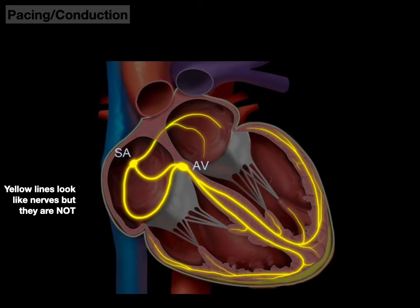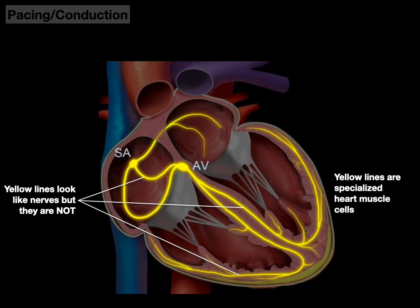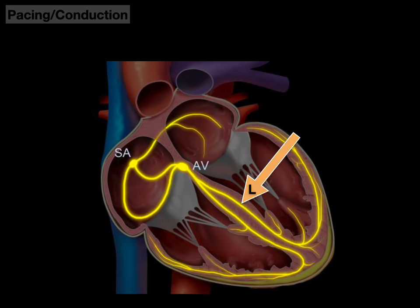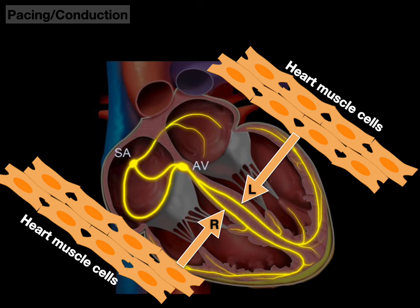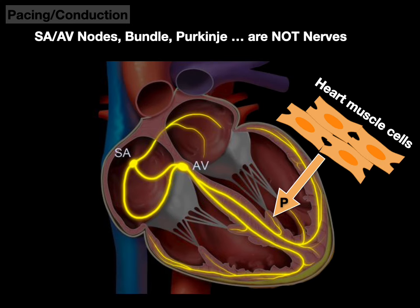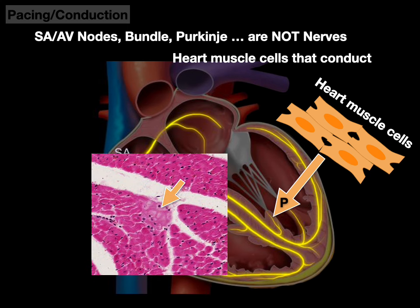Every anatomy picture of the heart shows yellow lines that look like nerves, but they're not. These yellow lines are actually specialized heart muscle cells — the bundle branches, Purkinje fibers — they're heart muscle cells. The pacing and conducting cells are not nerves; they're heart muscle cells that conduct instead of contract. So they have less myosin, and that's why they show up less pink and more pale in an H&E stain because there's less protein.